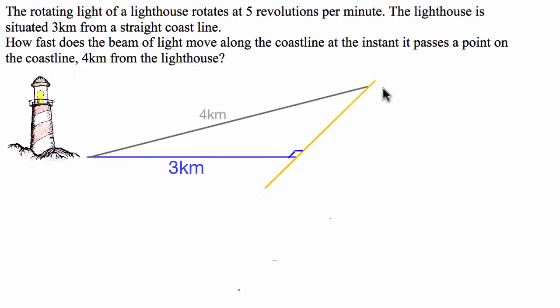So what we're going to do is we've got to find the speed at which this beam of light moves across this coastline. To start with, we're going to define this distance here from the perpendicular to the coastline to where the beam of light is. We're going to define this distance as x.